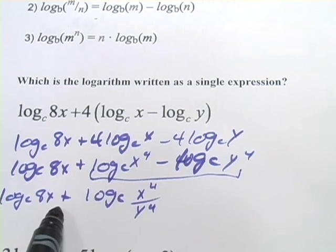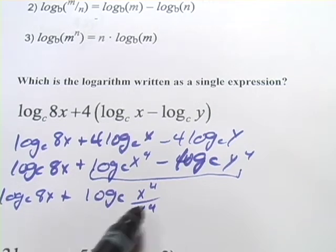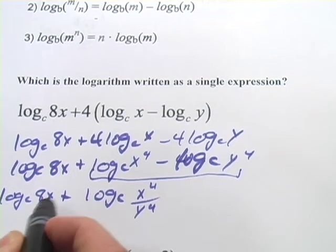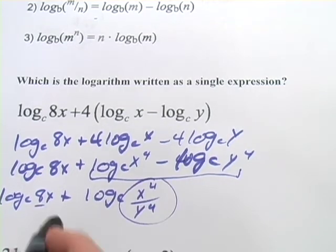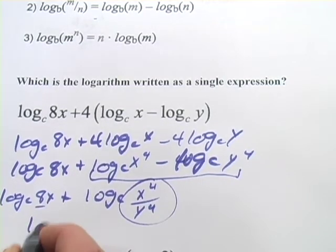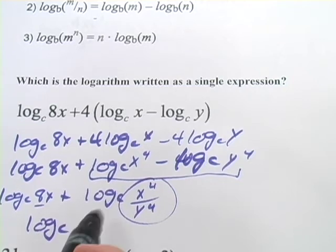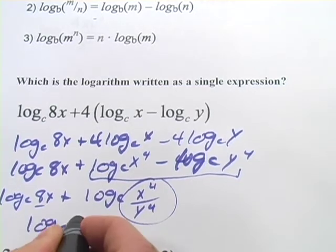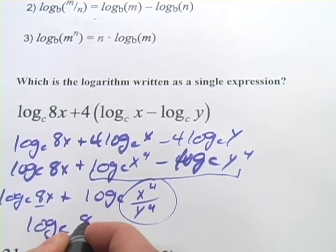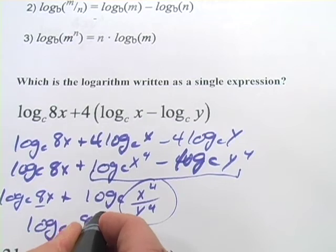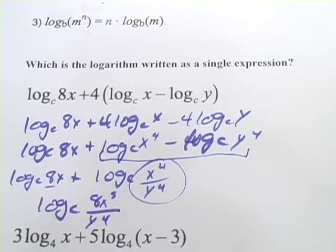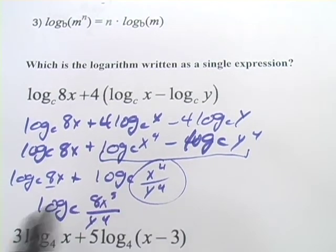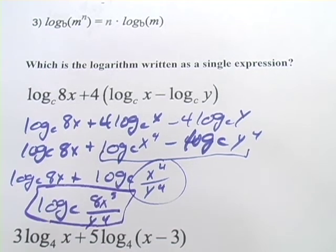Now addition turns into multiplication, so we can write all of this as log base c of 8x times that quantity. When we do that, we get log base c of — well, 8x times x to the fourth would be 8x to the fifth over y to the fourth. And now we've written that thing as a single expression.